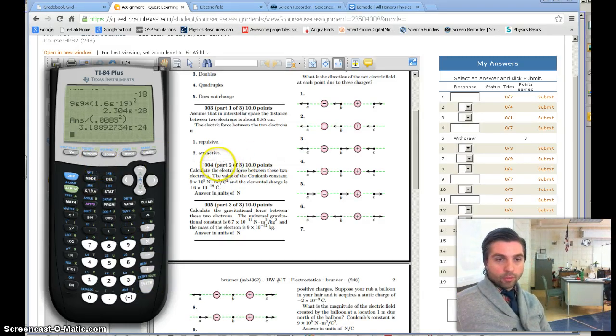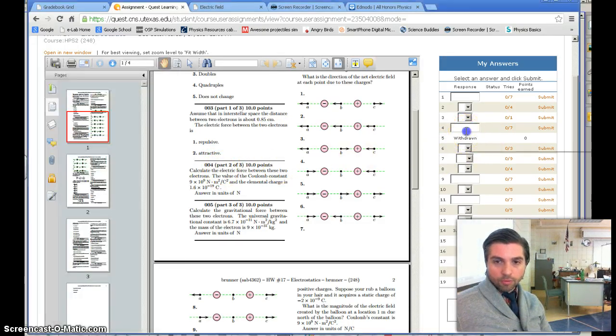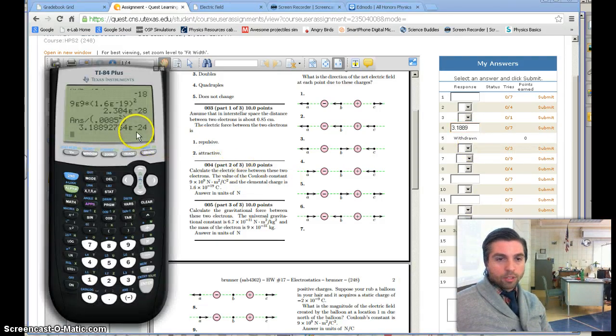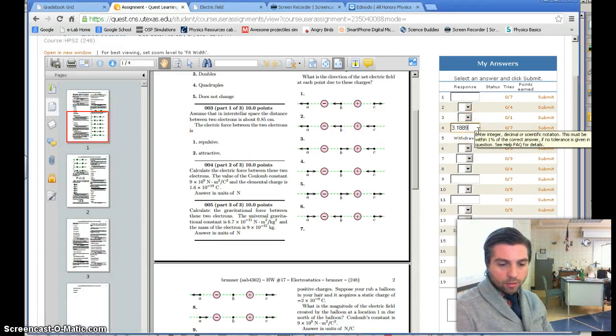So we have 3.1889. Let's go over to number 4, times 10 to the power. We also use e for that, e to the power of negative 24.